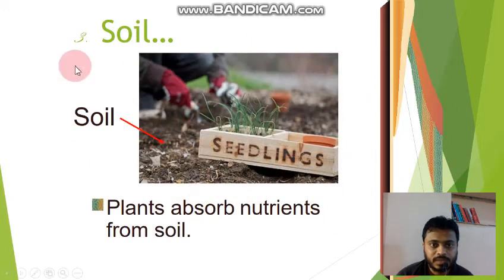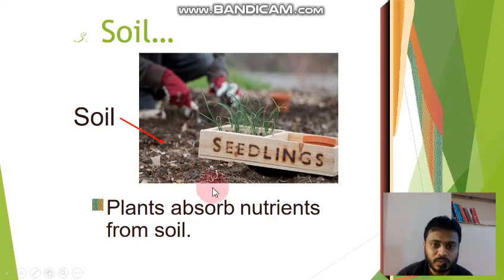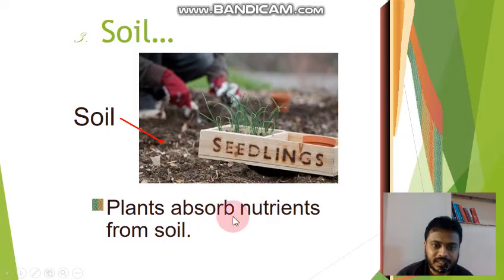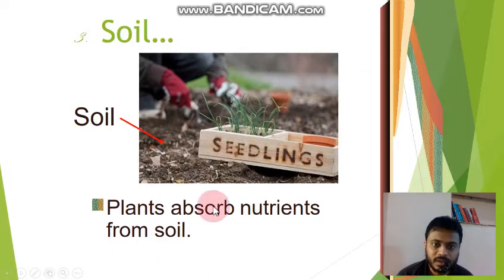Now the third one, that is soil. Like we eat food, plants also need food. They get their food from soil. Plants absorb nutrients from soil.